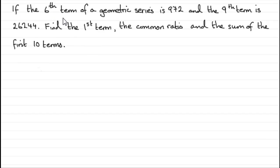If the 6th term of a geometric series is 972 and the 9th term is 26,244, what we've got to do is find the first term, the common ratio, and the sum of the first 10 terms.